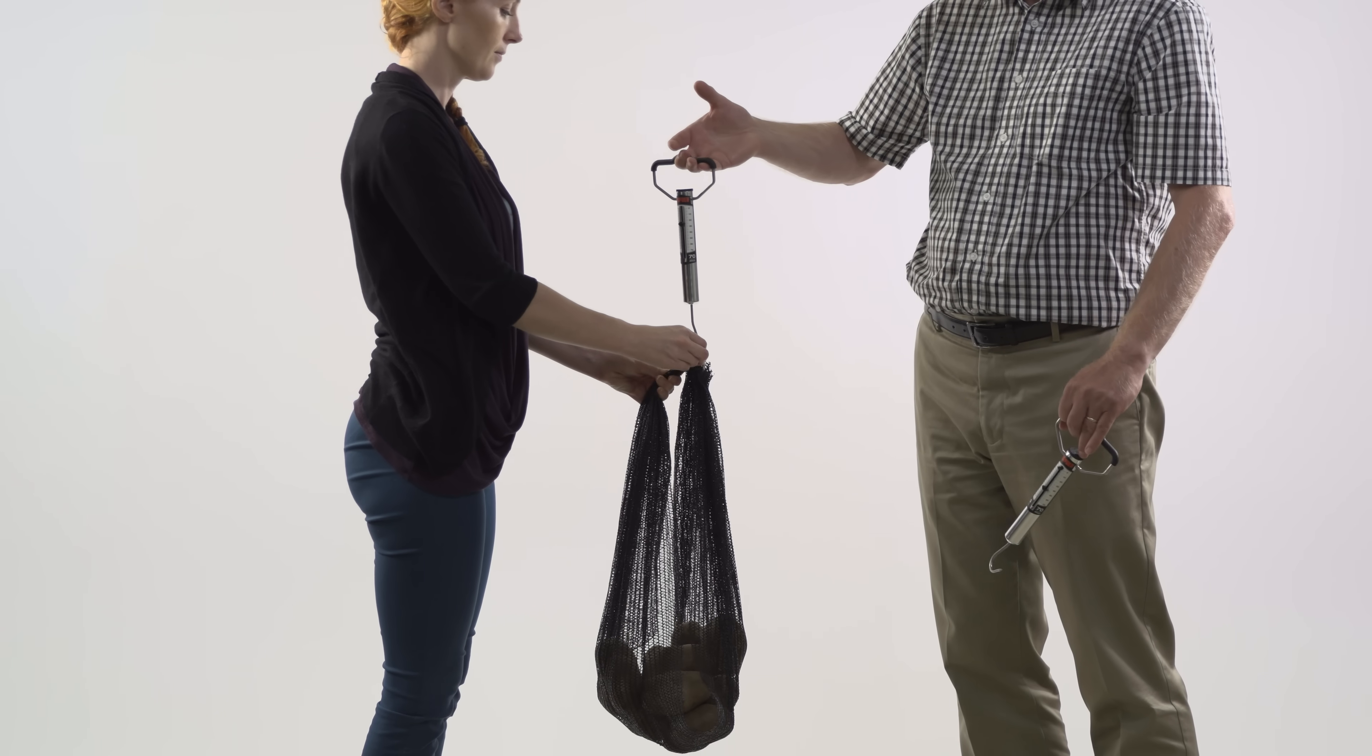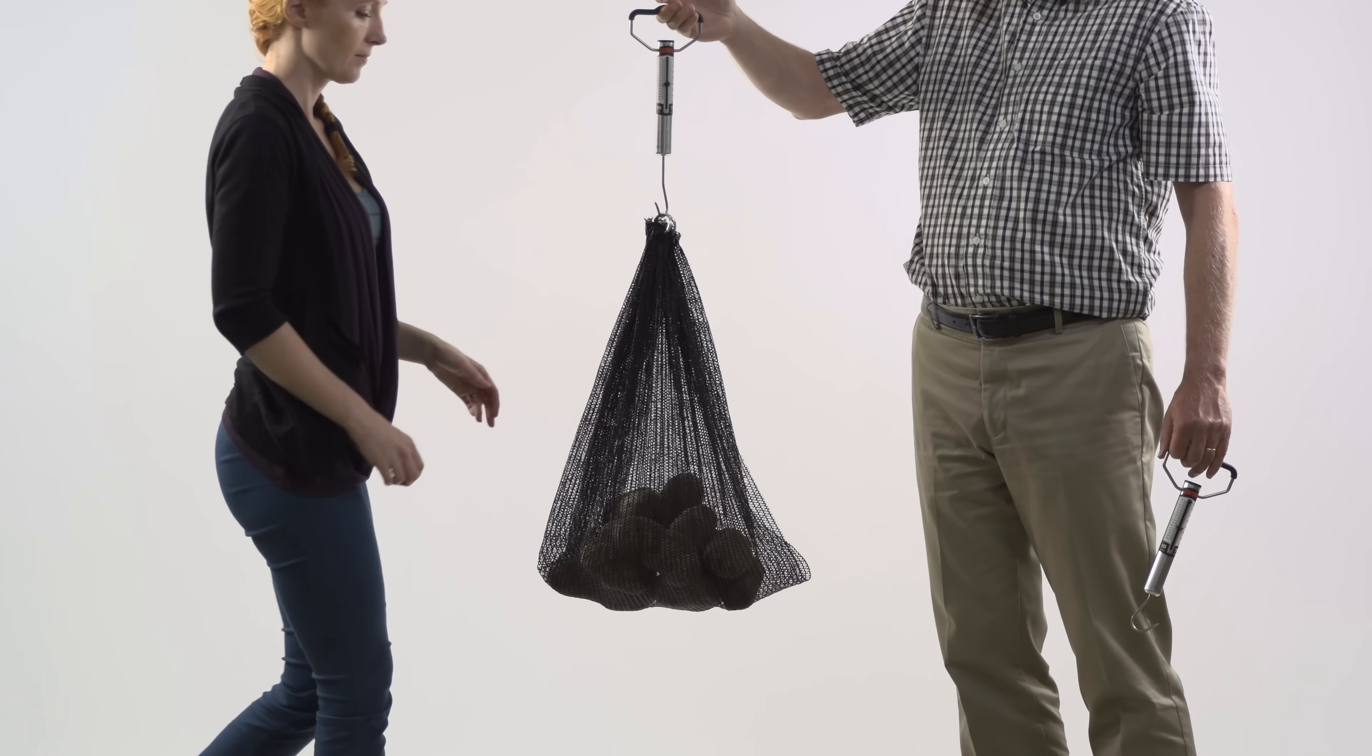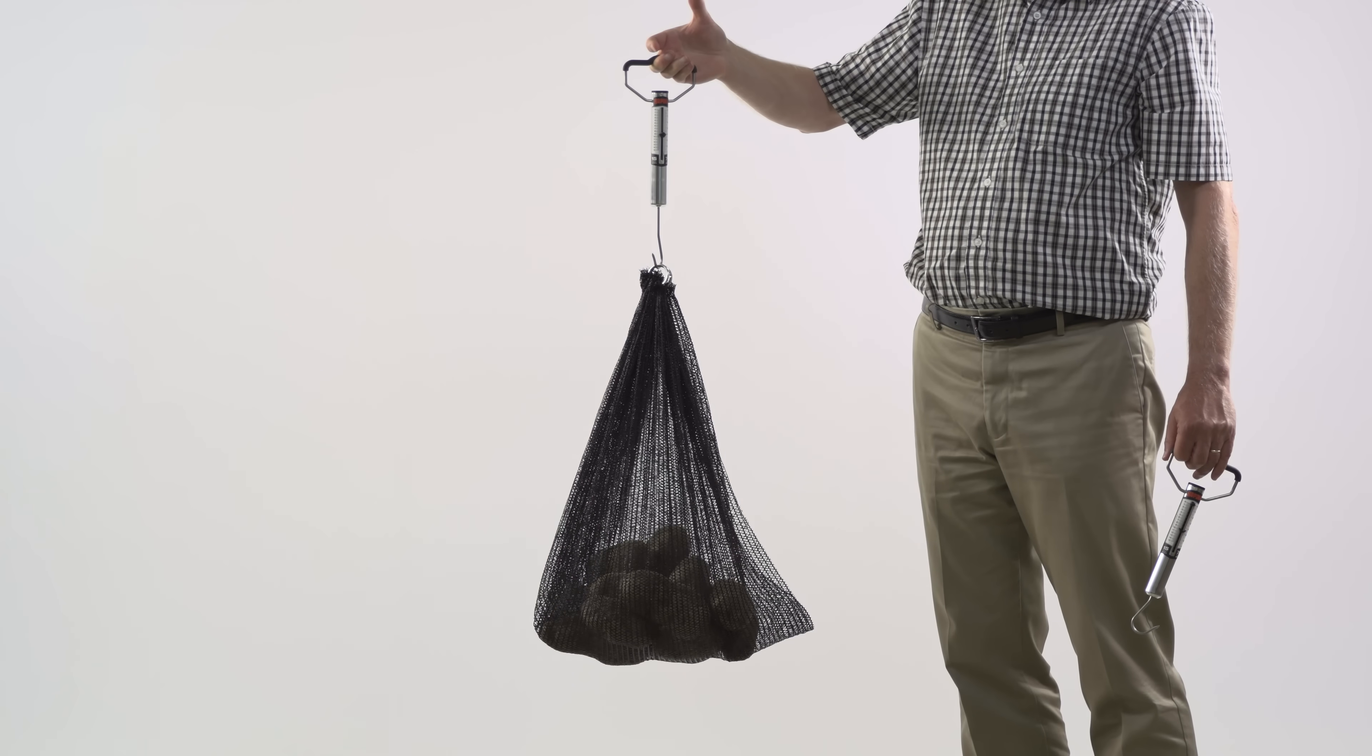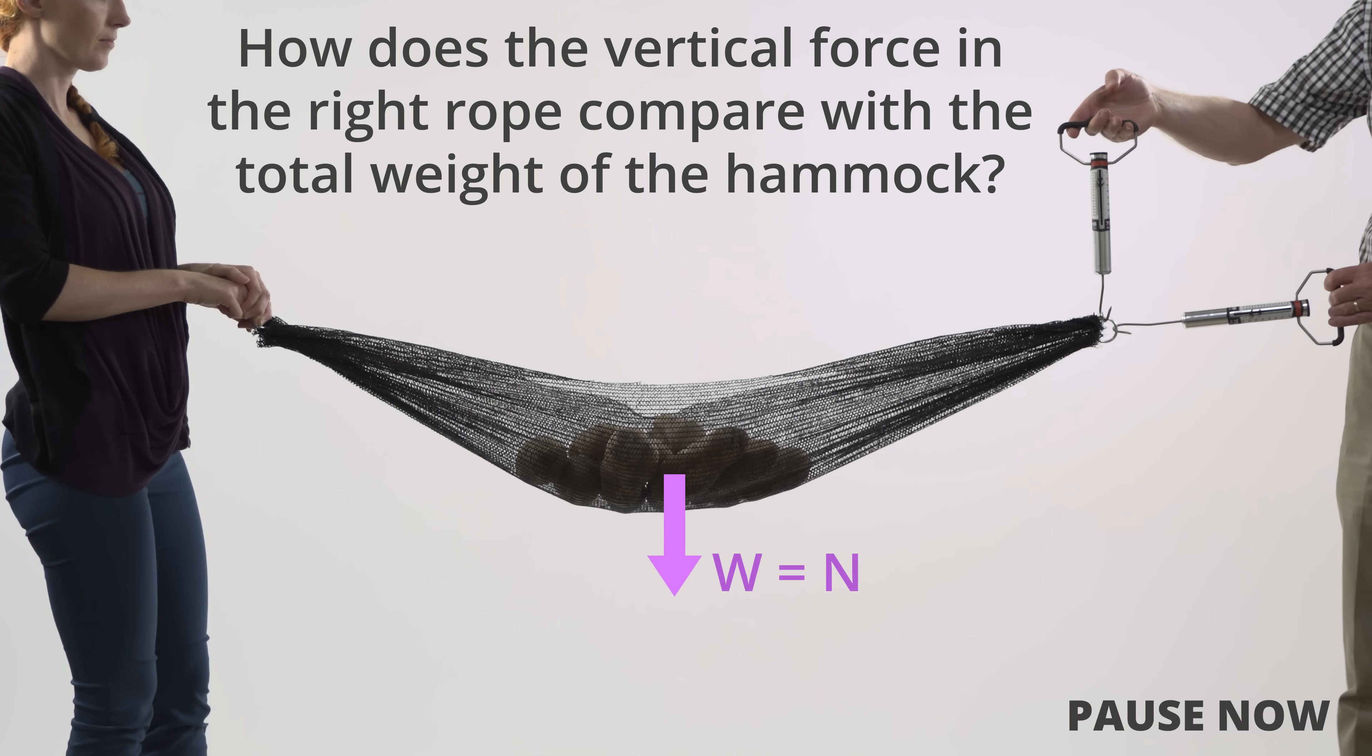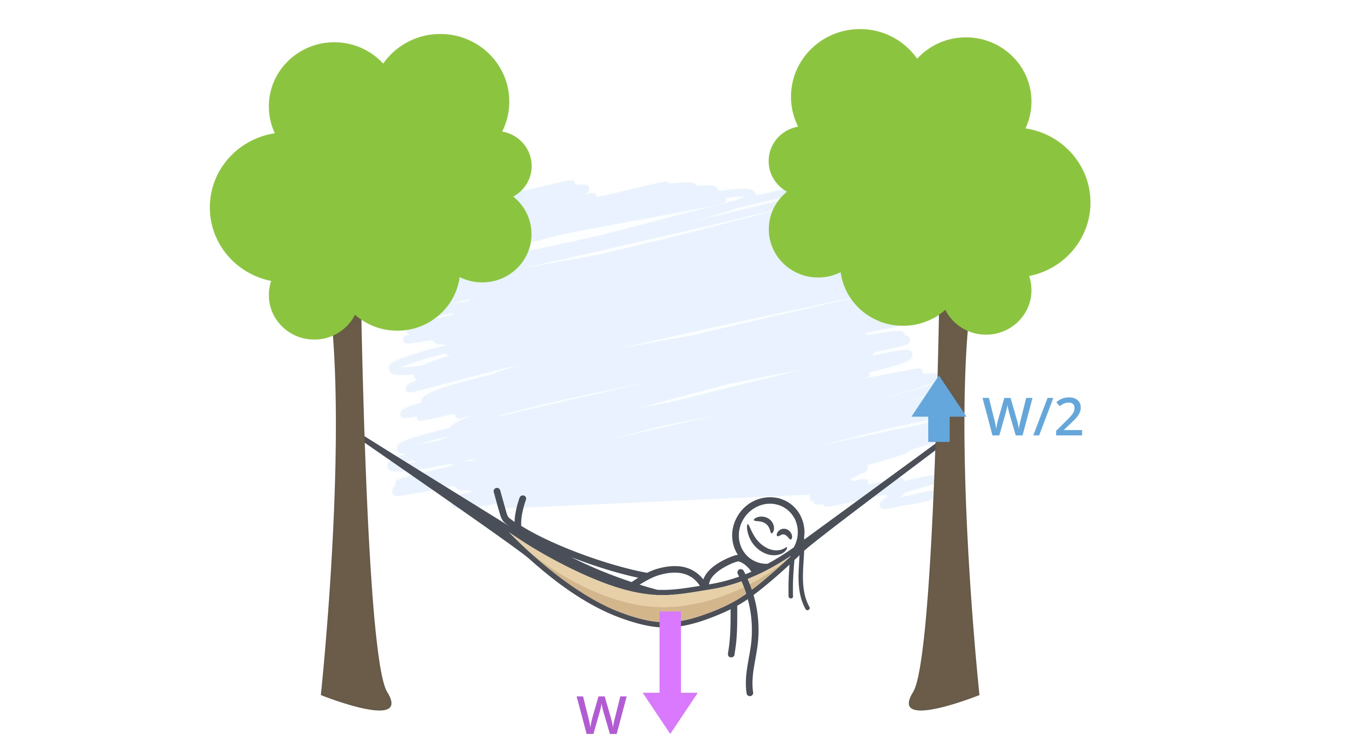Now, let's suspend the entire model hammock from one scale in order to measure its total weight, which turns out to be 40 newtons. How does the vertical force on the right rope compare with the total weight of the hammock? It turns out to be exactly half of that weight. The same is true for the vertical force on the left rope.